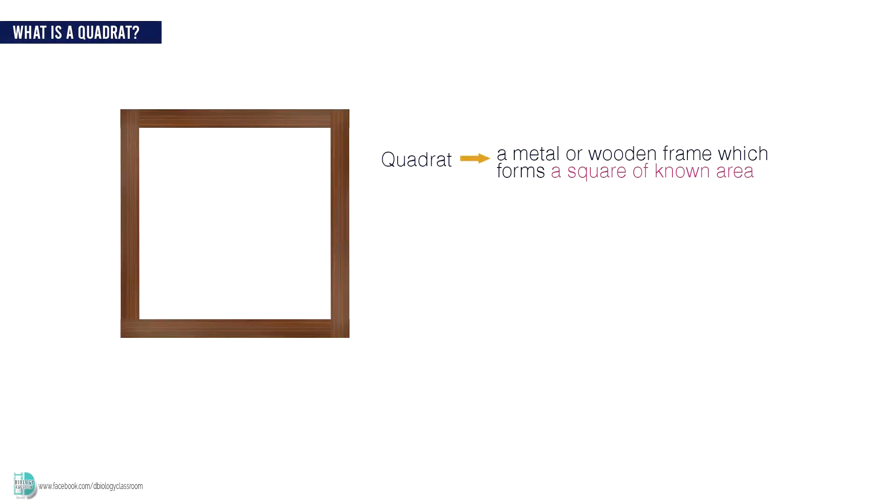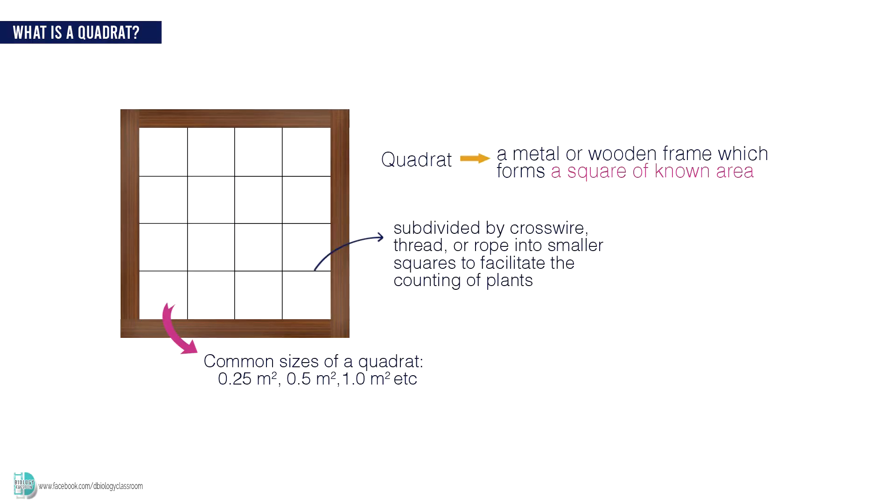A quadrat is a metal or wooden frame which forms a square of known area. The size is usually 0.25, 0.5, or 1 meter square, but it can vary according to the nature of the area being sampled. The frame is subdivided by cross wire, thread, or rope into smaller squares to facilitate the counting of plants.